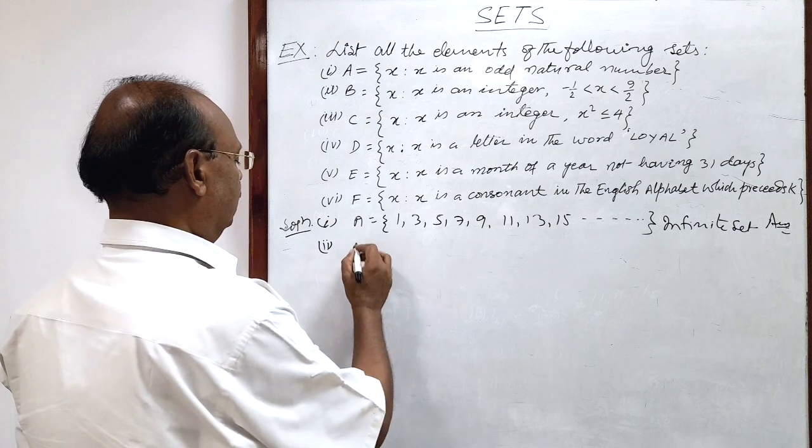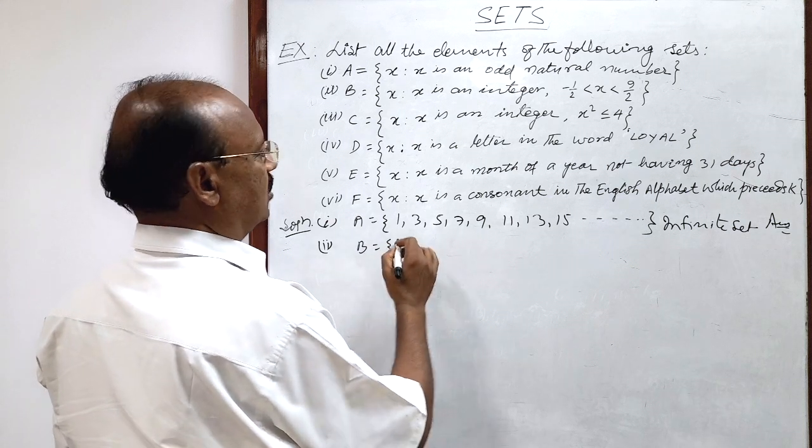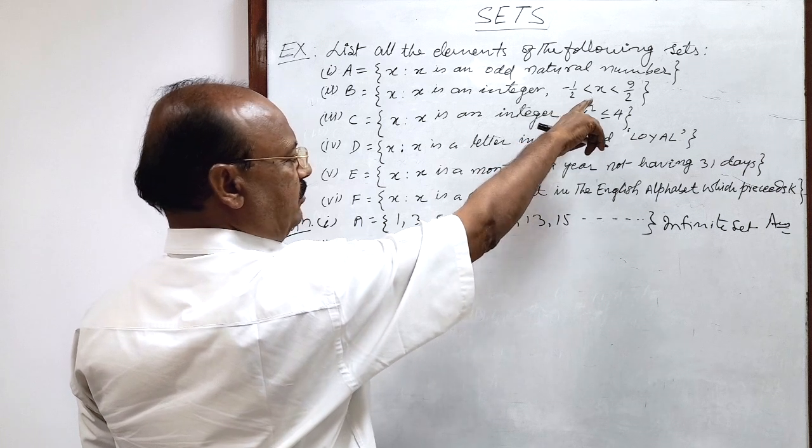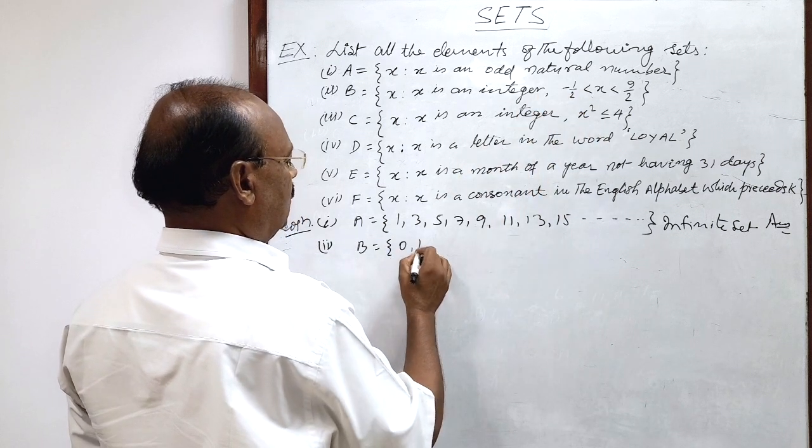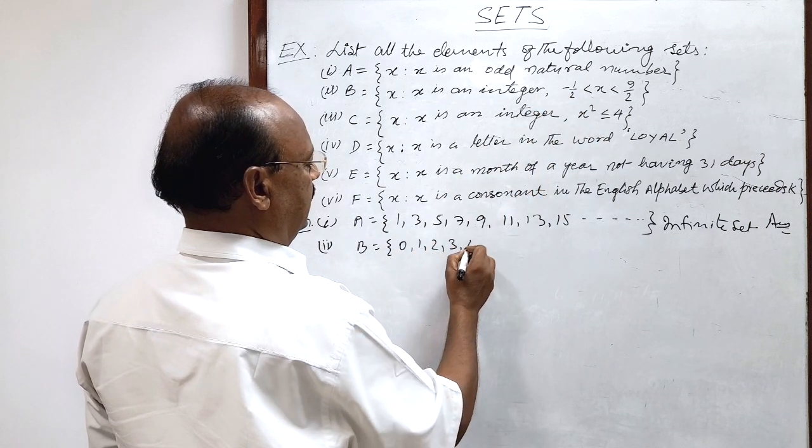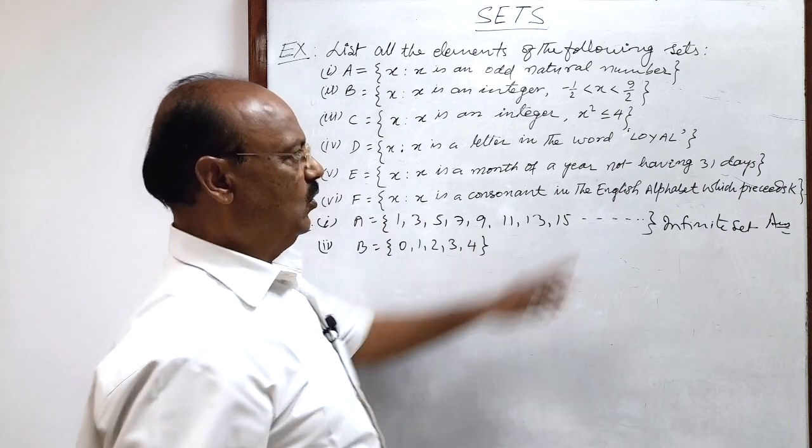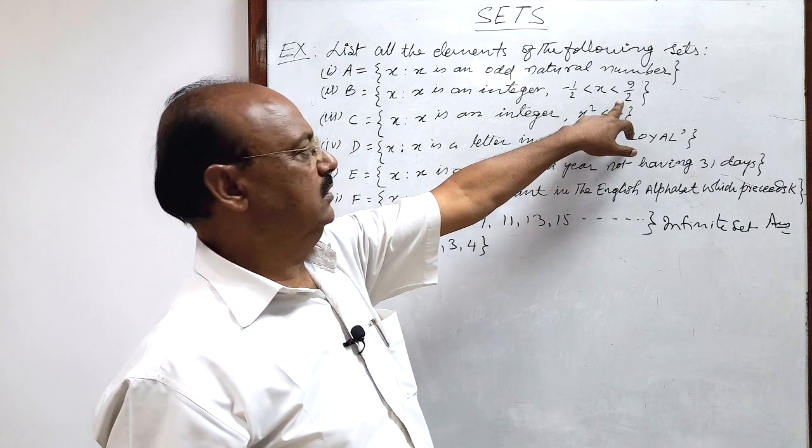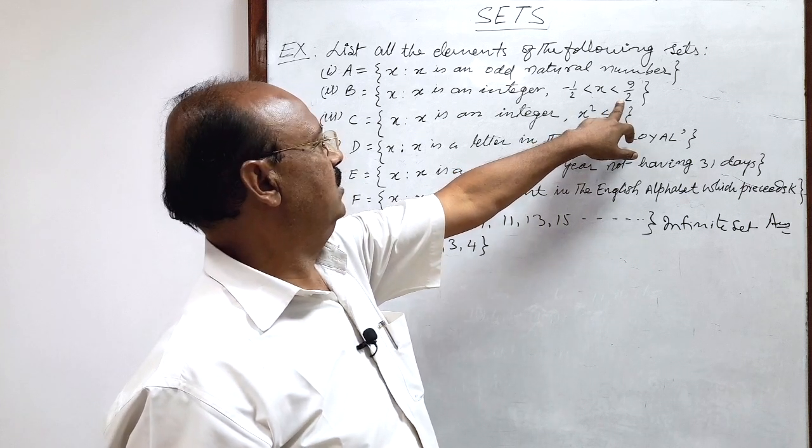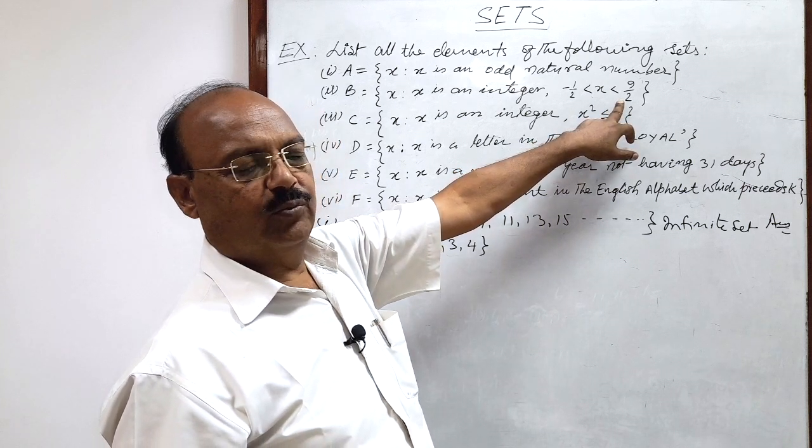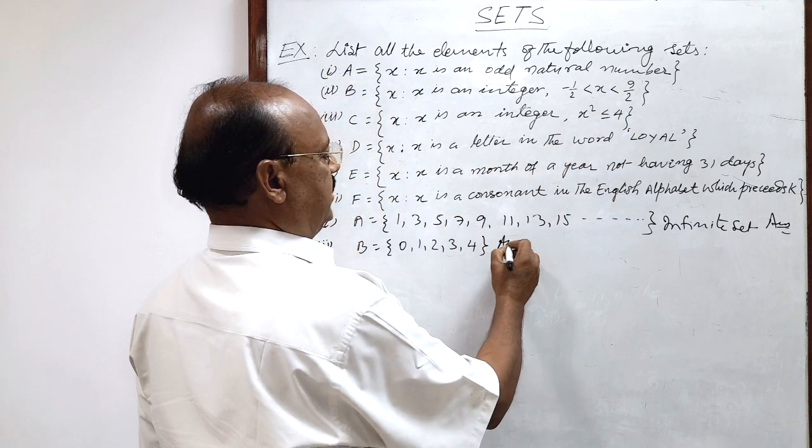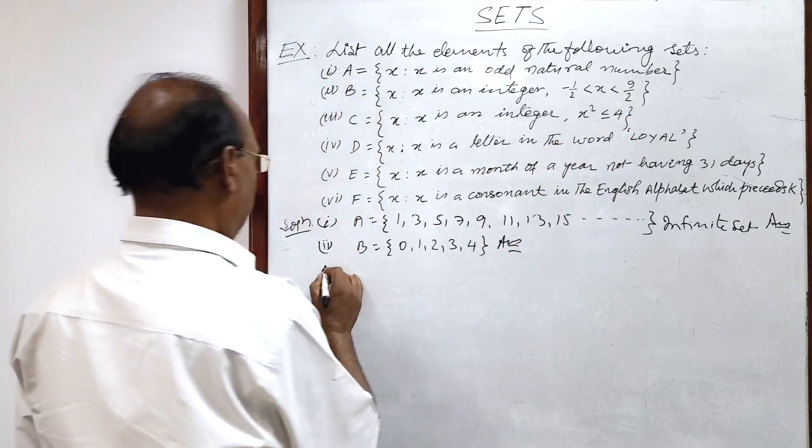So therefore here set b will consist of the elements which are greater than minus 0.5, so that is 0, 1, 2, 3 and 4 is smaller than 9 by 2 means 4.5. So the last natural number or integer smaller than 4.5 is 4. So this is the answer of the second part of this question.